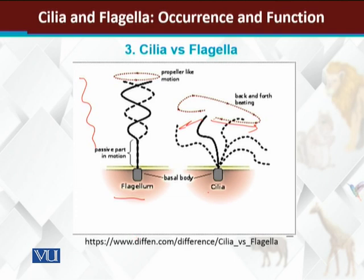Flagella move in a whip-like, rotary motion — a thread-like structure that rotates. So the movement of flagella is whip-like and rotational, whereas cilia move in a straight back-and-forth direction.